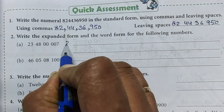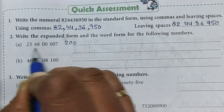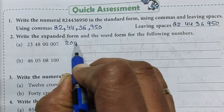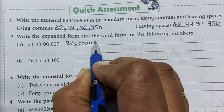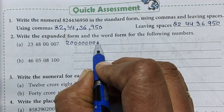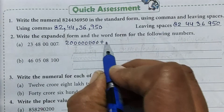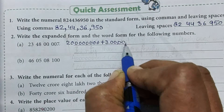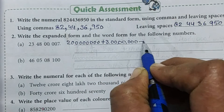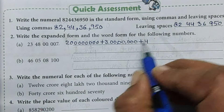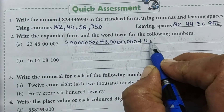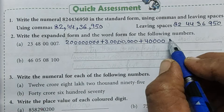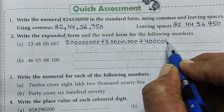So for the crore place, we write 2 followed by zeros — that is 20,00,00,000. Plus 3 followed by zeros — that is 3,00,00,000. Plus 4, meaning 40 lakh — that is 40,00,000. Plus 8 lakh — that is 8,00,000.